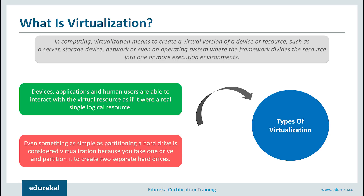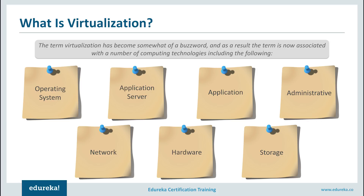There are several types of virtualization we deal with today, and most of you might already be using these without being aware of it. First, there is operating system level virtualization, the most common type. You have particular hardware and on top run multiple operating systems. For example, if I have applications that need to run on Mac OS, Windows, and Linux, instead of three different systems I can have a single system running all three operating systems — saving both resources and money.